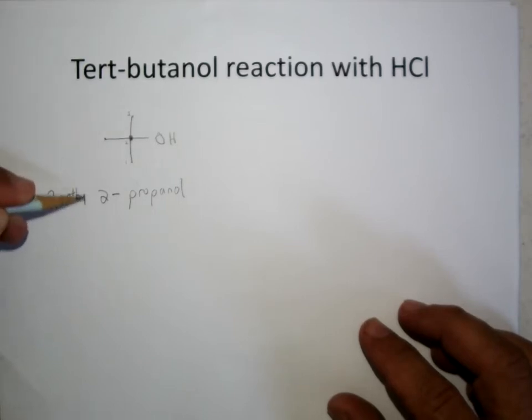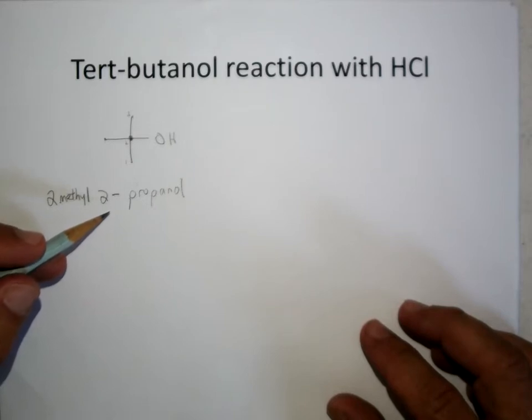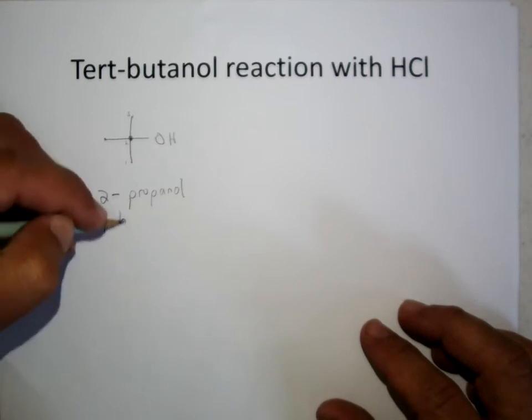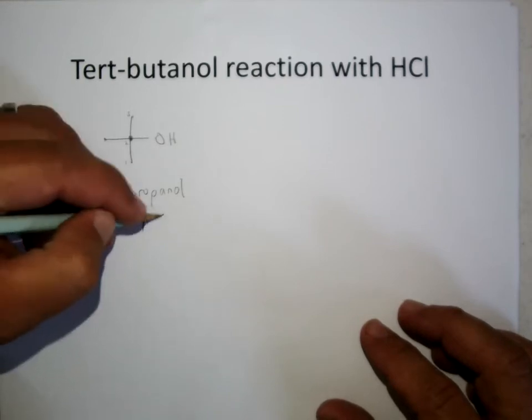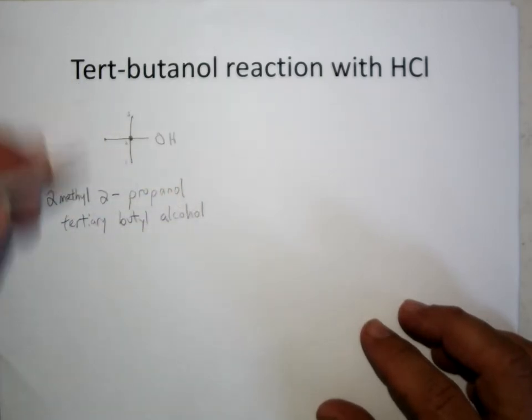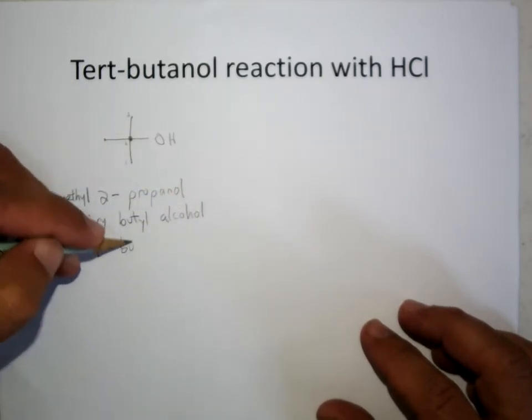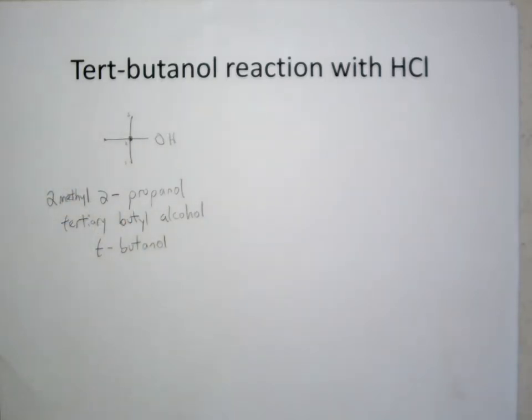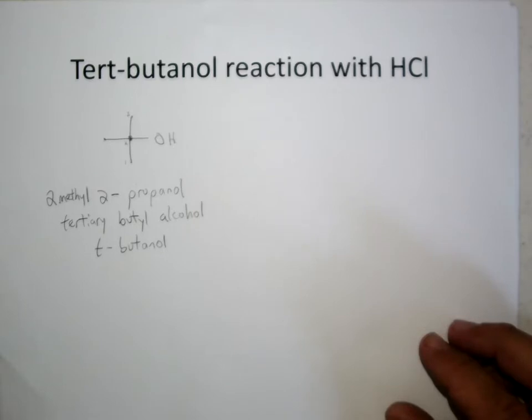So 2-methyl-2-propanol would be the systematic name for tertiary butyl alcohol, another one of its historic names, and some people would call it t-butanol. So you can imagine being an organic chemist, you have to know the formal names and the nicknames and the common names of many of the chemicals if you're going to communicate with another organic chemist.